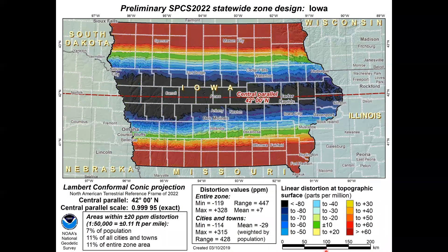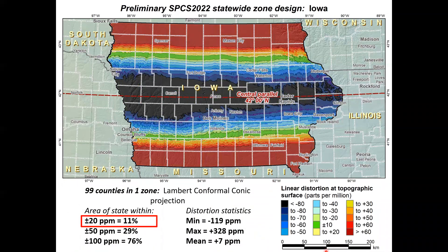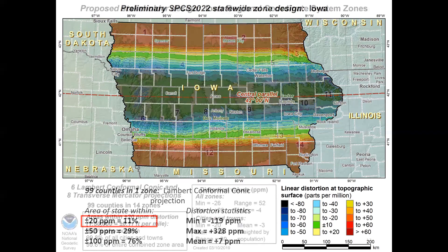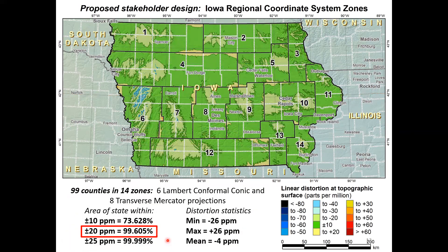Now with the color step changed to plus or minus 10 parts per million, you can see that only 11% of the state is within 20 parts per million distortion — about a tenth of a foot per mile. Most people consider that low distortion. Obviously a statewide zone does not give them low distortion. However, they also have a system — 14 zones for 99 counties — where the zone boundaries correspond to county lines, and 99.6% of the state is covered within 20 parts per million. So you can see there's very low distortion for the entire state — this is what they want.